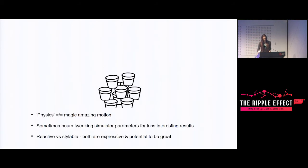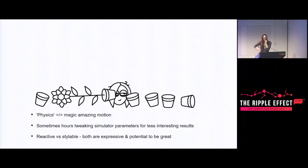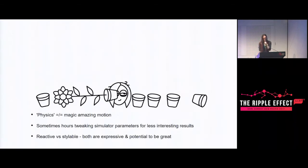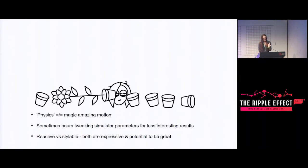Just thinking 'oh we could animate this, but I'll just run it through the physics system - that'll automatically make it amazing' - no. In games you can often spend way more time tweaking simulation parameters and getting physics stable and not jittering. It's useful to consider the trade-offs, because physics isn't automatically better or worse, and hand-animated isn't automatically better or worse. Really the trade-off is about reactivity versus stylability. Physics is reactive - it can respond to things in ways you haven't necessarily thought of. Hand-crafted interpolation is very stylable because you can expressly define what's happening.